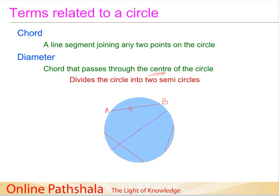A diameter divides the circle into two semicircles. If you try to find the number of lines that can pass through the center, you can draw many — there is a huge number of lines that can pass through the center of a circle. It is also important to know that the length of diameter CD is equal to twice the length of the radius.